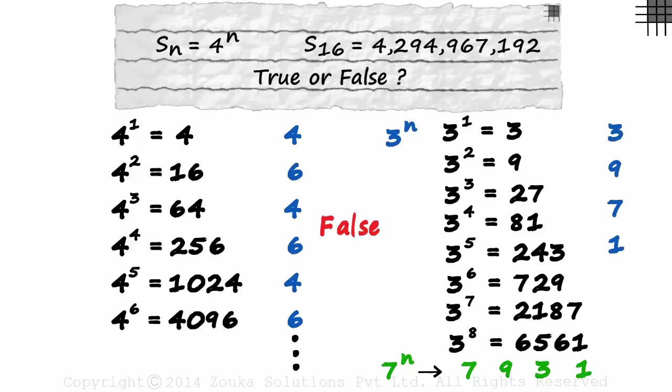If we asked for the units digit of 3 raised to 36, we can be sure it's 1. If it is of the form 3 raised to 4n, then the units digit will be 1. So whenever you are asked for the large exponent of a number, it will probably pertain to this concept.